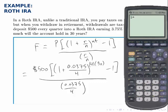So, add 1 plus 0.0375, divided by 4. Raise that answer to the 4 times 30, or 120. Subtract 1 from that answer.